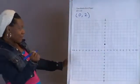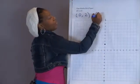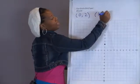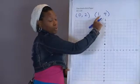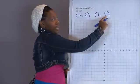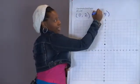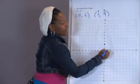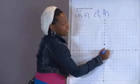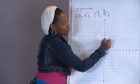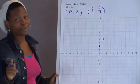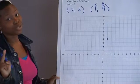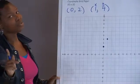My second coordinate point is (1, 4). Remember, first point, left, right. Second one, up or down. This is your X. This is your Y. So I'm going to go to 1 on my X axis. Go up to 4 on my Y axis. Now, remember, I could stop here because it only takes 2 points to make a line. But I'll do one more for you.